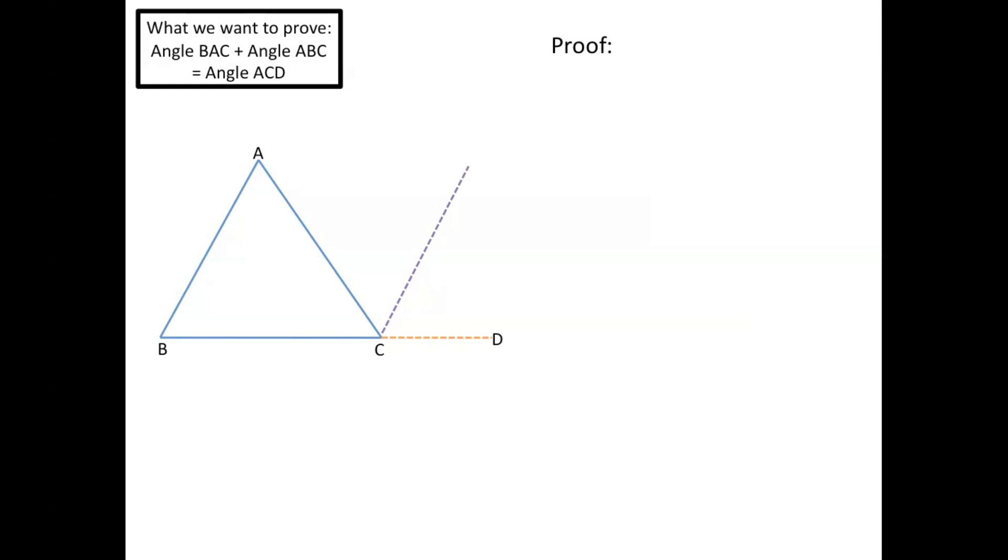Well, first we'll draw a line from C and call this point E. We're going to draw line CE such that it's parallel to line AB.